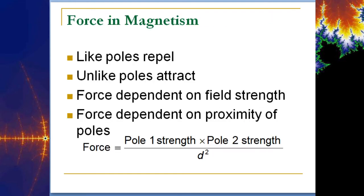As a reminder: like poles repel, unlike poles attract, just like with charge. Force is dependent on the field strength and on the proximity of the poles, and that's a squared term — so you get an exponential response. The closer two magnets get, the exponentially stronger the force becomes, whether attractive or repulsive. Distance is absolutely one of the biggest factors in how this force is exerted.